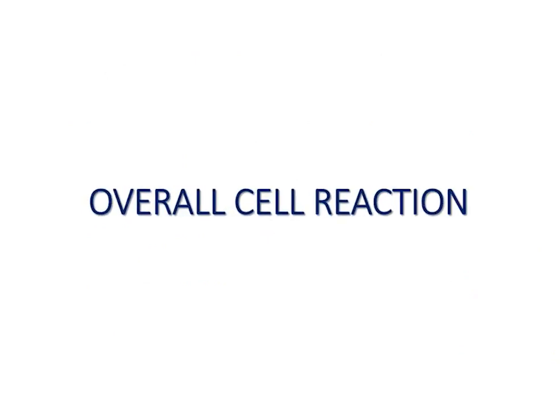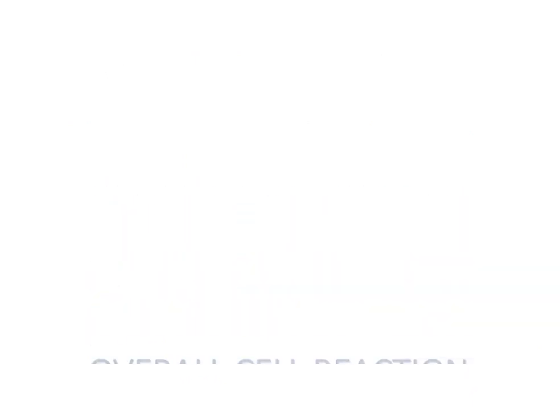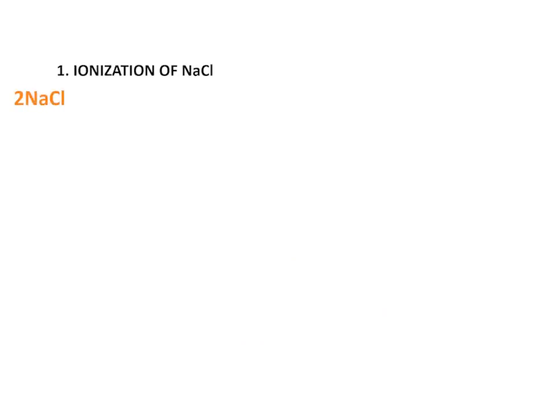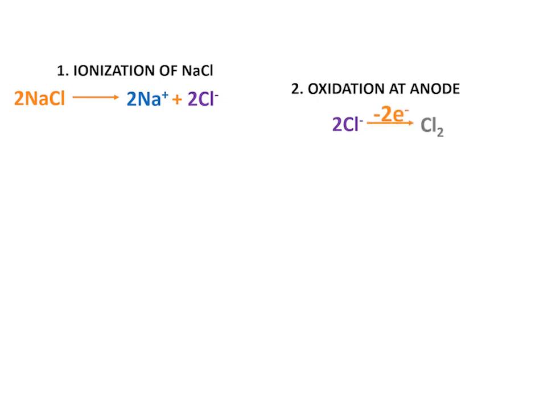Now summing up the overall cell reaction of anode and cathode. When brine is subjected to electrolysis, the first step is the ionization of the salt, resulting in sodium positive ions and chloride negative ions. Chloride ions are oxidized and by the loss of electrons form chlorine gas over the anode.